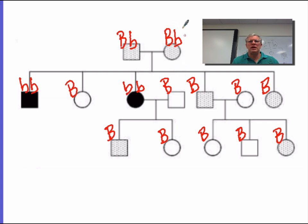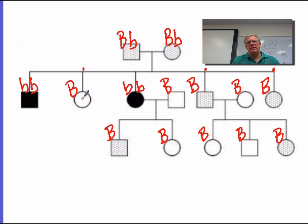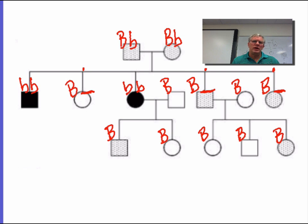So we can figure out mom and dad. Now what about the remainder of the children — this child, this child, and this child? Could this daughter have gotten a big B from mom or dad? The answer is yes. Could this child have gotten a little b from mom or dad? The answer is also yes. So this child could be big B, big B or big B, little b — and so could the other children. We do not know by looking at the pedigree whether they received a big B or a little b as the second allele; all we know is the first allele.